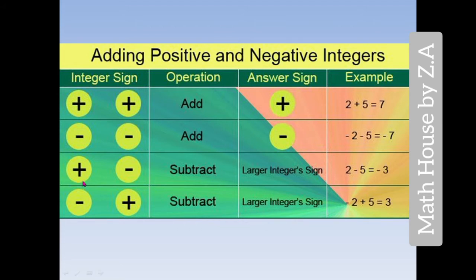Now we have two integers with different signs — one is positive and one is negative. When we have opposite signs, we subtract. As you can see here, two is a positive number and five is a negative number, and two is less than five. That is why the answer has a negative sign, because five is the greater or larger number.